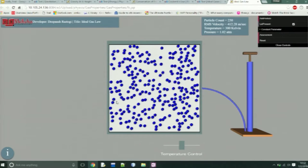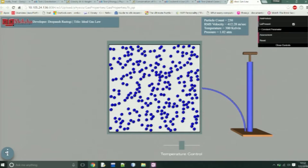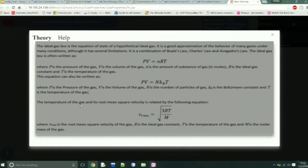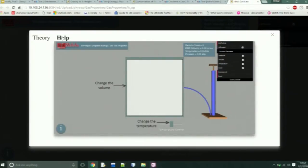He can see the information regarding the experiment if he wants to see it. Again, the theory is given here and the help regarding the experiment has also been shown.